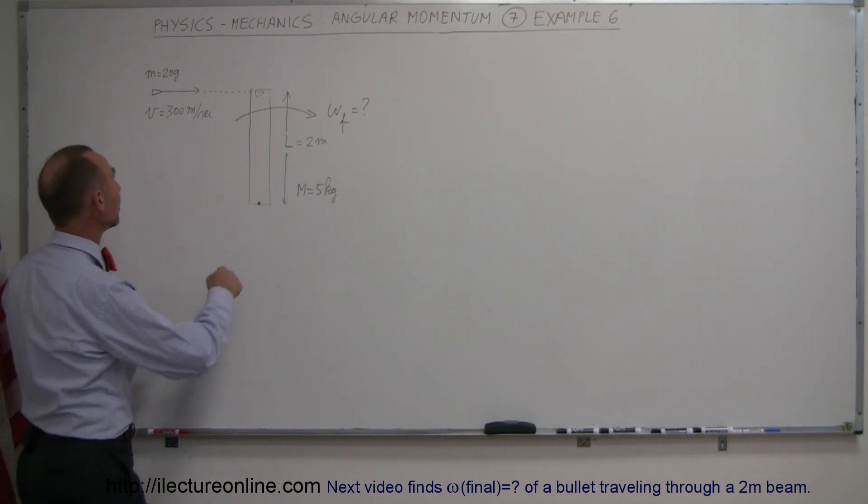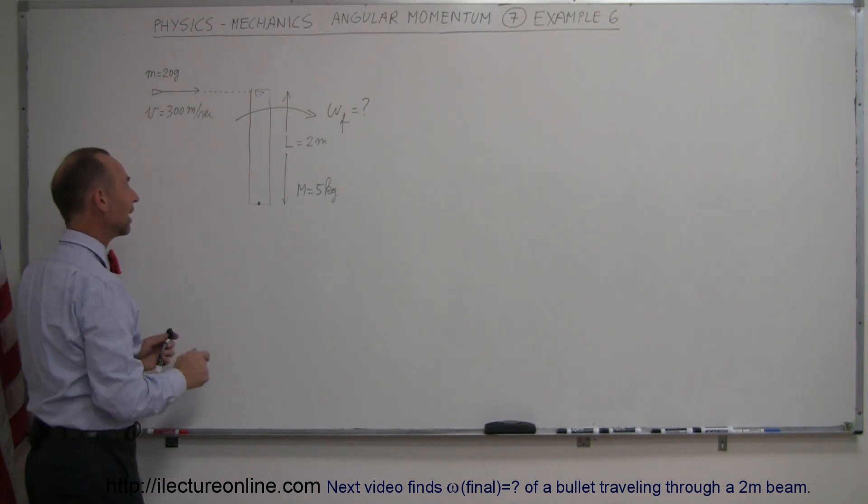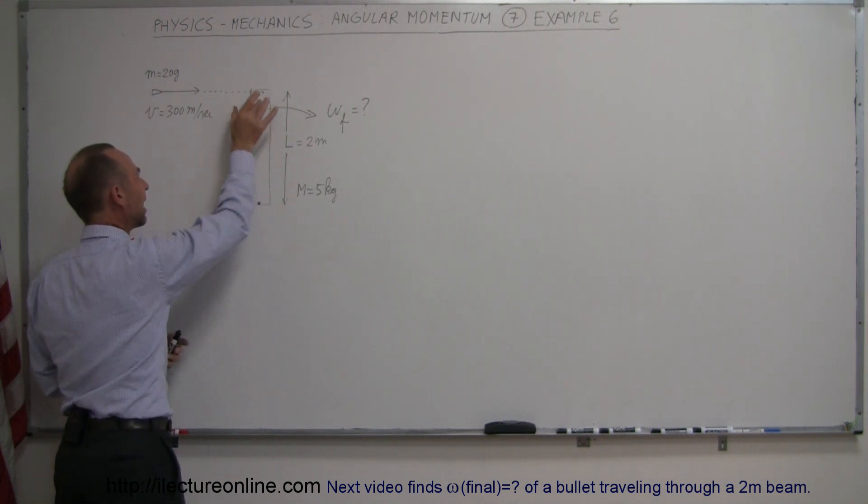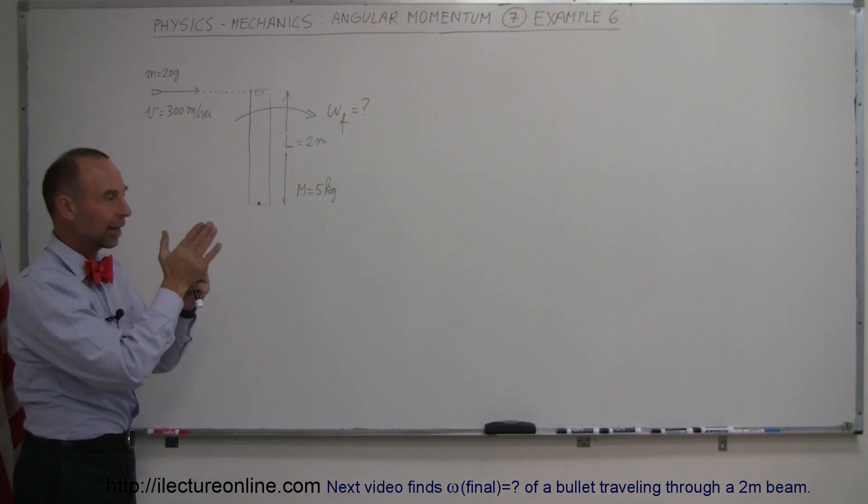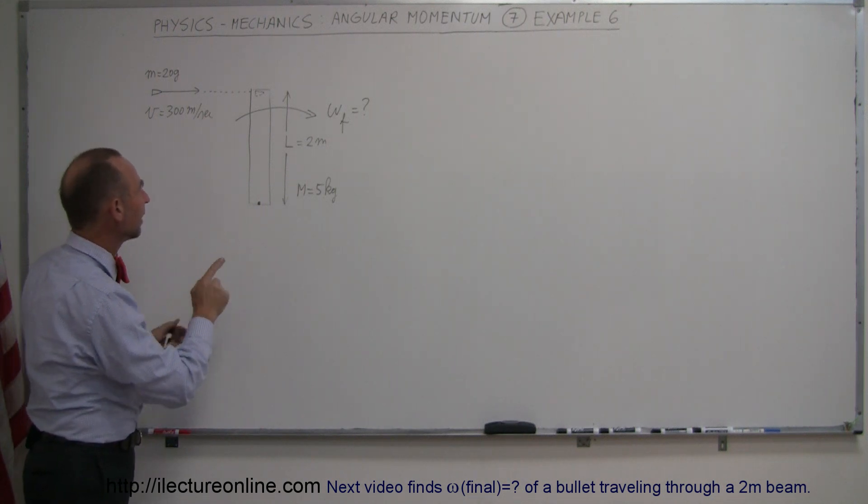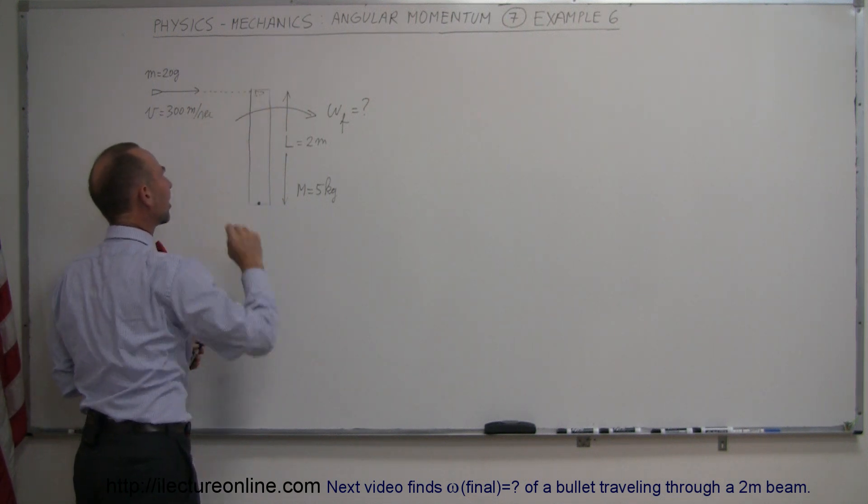In this example we have a bullet streaming along at 300 meters per second. The mass of the bullet is 20 grams and it strikes a wooden post which is connected at the very bottom and therefore able to rotate. It's hitting the beam at the very top and embedding itself in the beam.